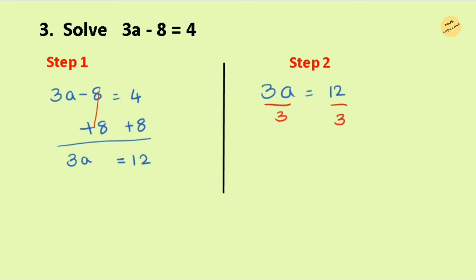Now it's a multiplication equation, so let's do the second step: division — the inverse of multiplication. Divide by 3 on both sides so that we can keep the variable a alone. We don't need any coefficient with the variable, because we are finding the value of a. So a equals 12 divided by 3, which is 4.